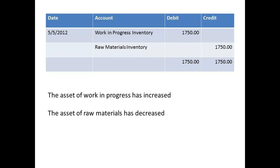In addition to the information being recorded on the job sheet, the supply of raw materials will produce an entry to the accounts. The journal entry has been shown here. The inventory account for work in progress is debited with $1,750, and the inventory account for raw materials has been credited with $1,750. The asset of work in progress has increased, and the asset of raw materials has decreased.